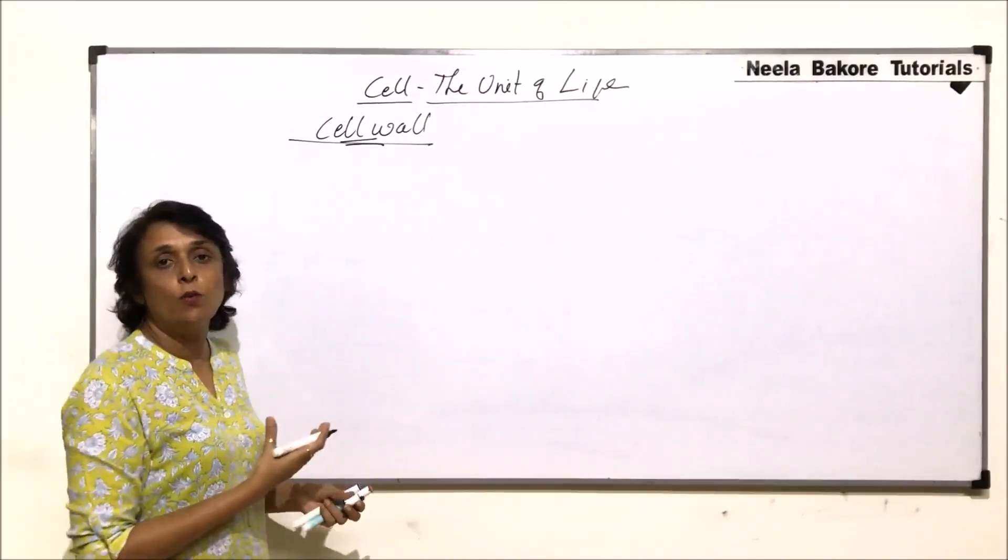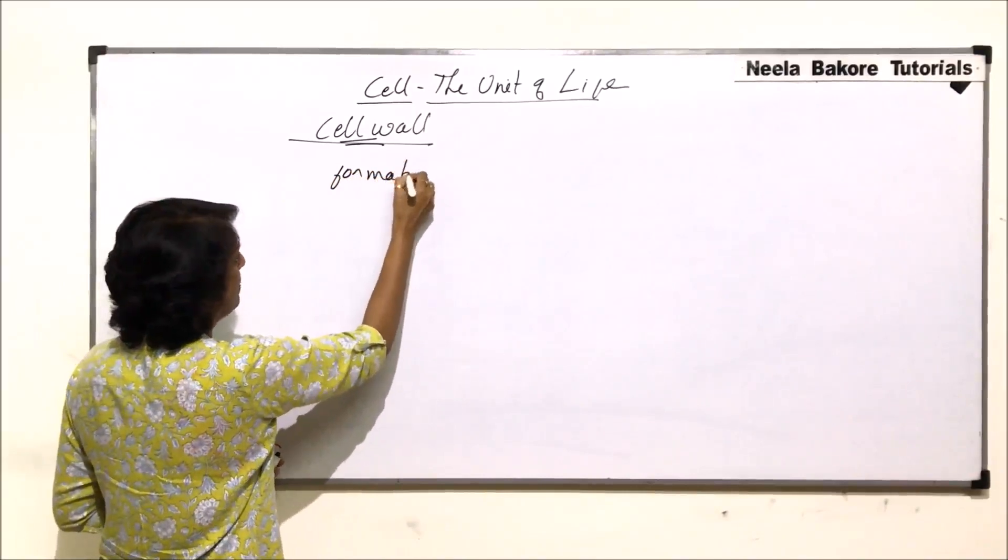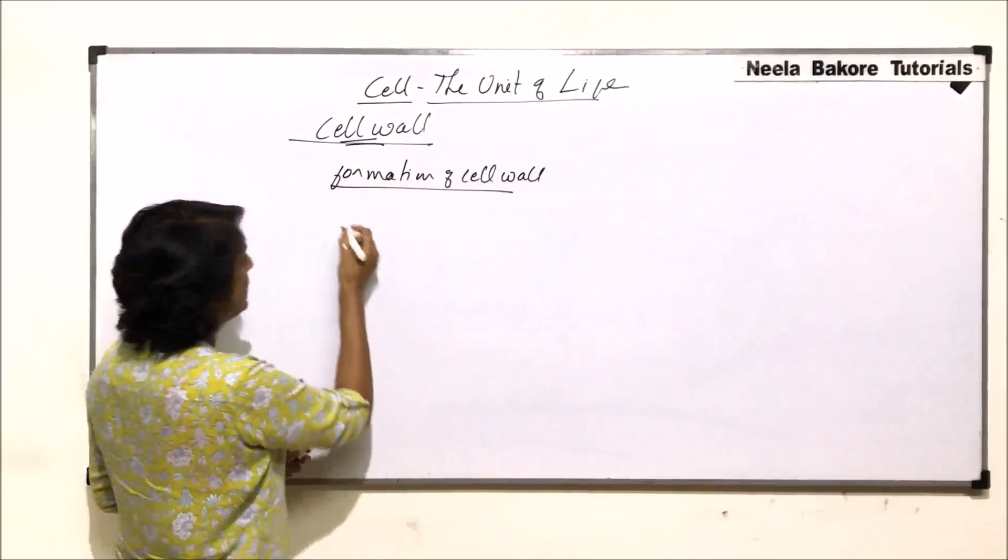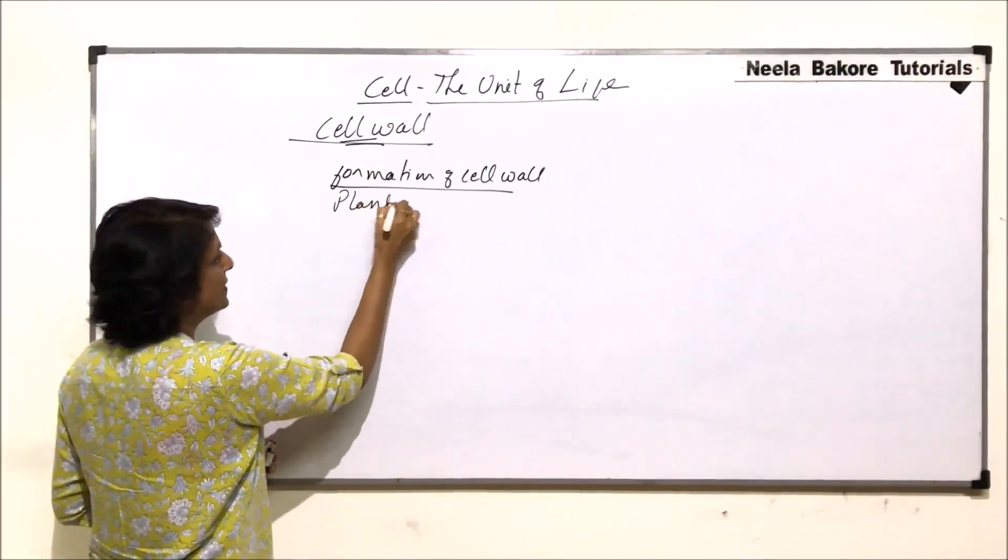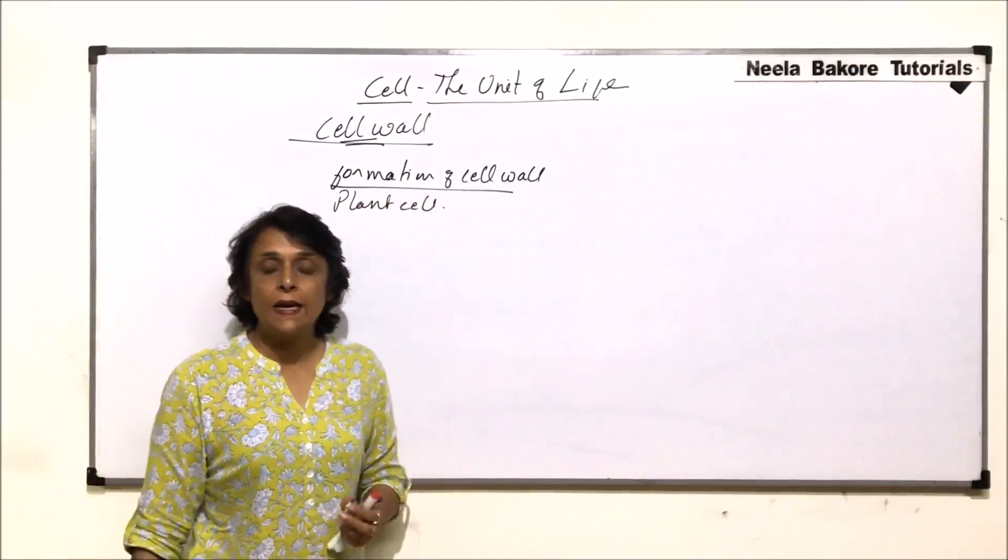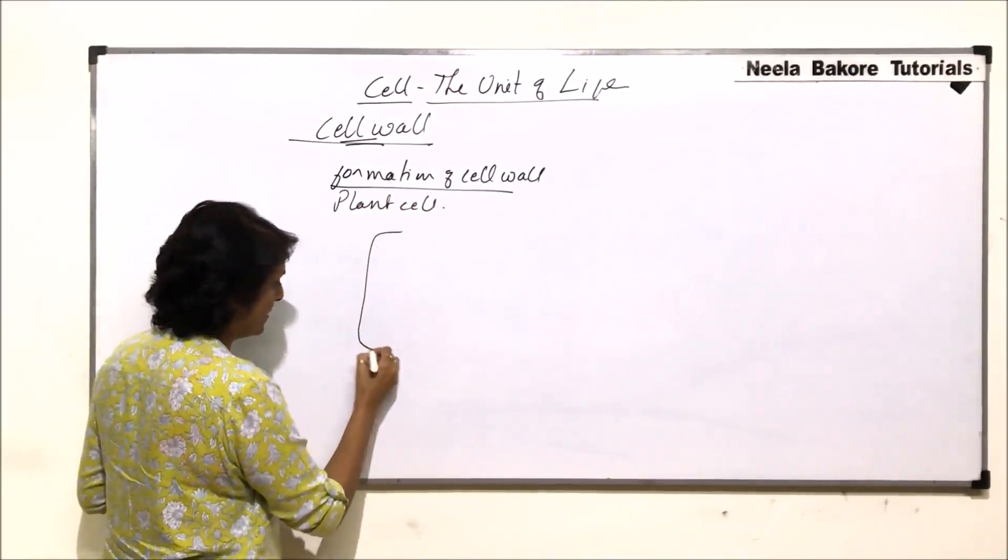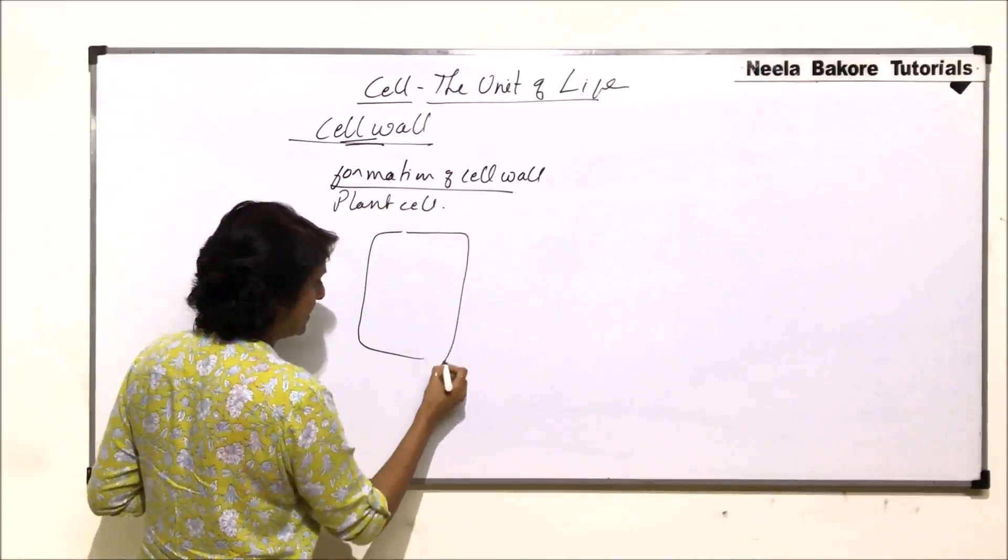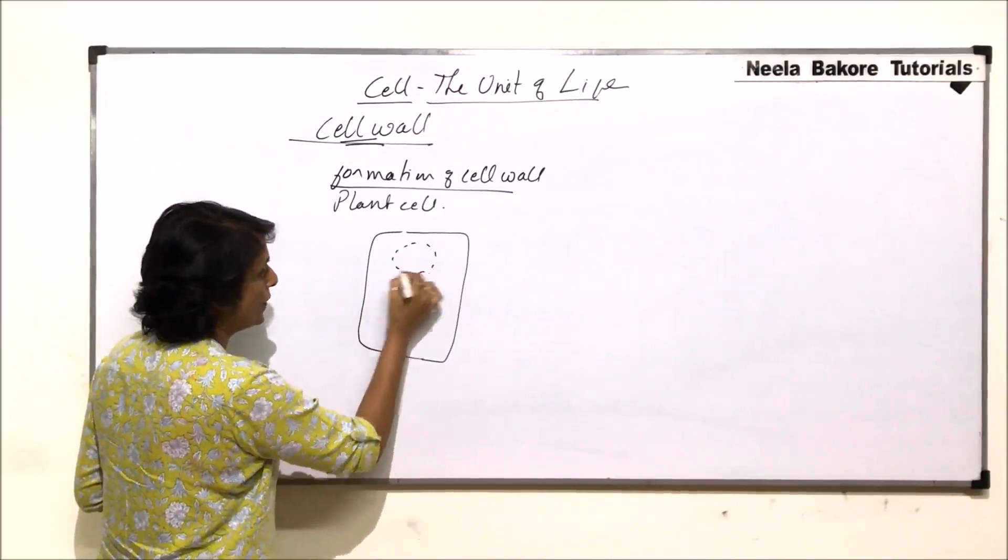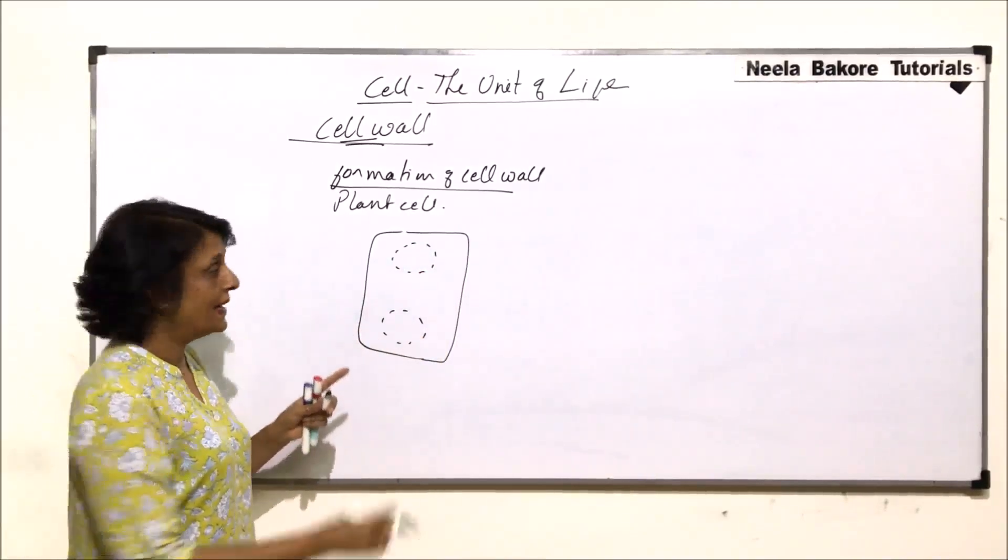So from where does this cell wall originate? We are talking of the formation of cell wall, and again we are referring to the plant cell. Cell wall is formed at the time of cytokinesis. Let us draw one simple cell here. This is a plant cell.